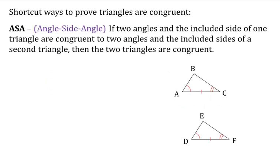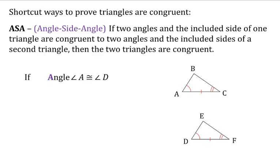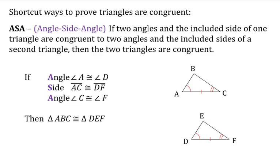Now we have ASA, or angle-side-angle. If two angles and the included side of one triangle are congruent to two angles and the included side of a second triangle, then the two triangles are congruent. The included side is the side that both angles are touching — it must touch both angles. So angle A is congruent to angle D, side AC is congruent to side DF, and angle C is congruent to angle F. That gives us angle-side-angle, so triangle ABC is congruent to triangle DEF.